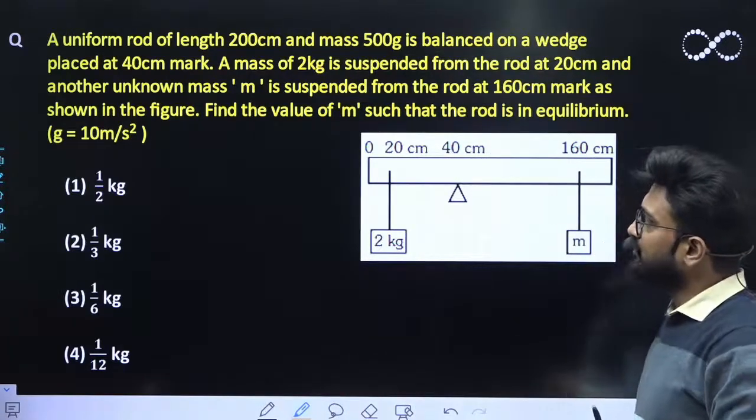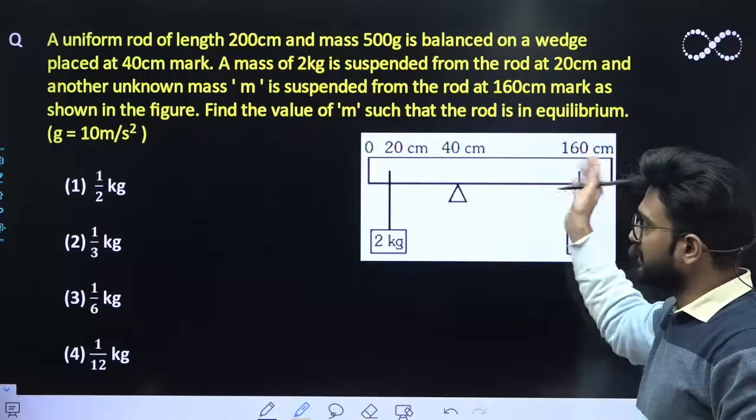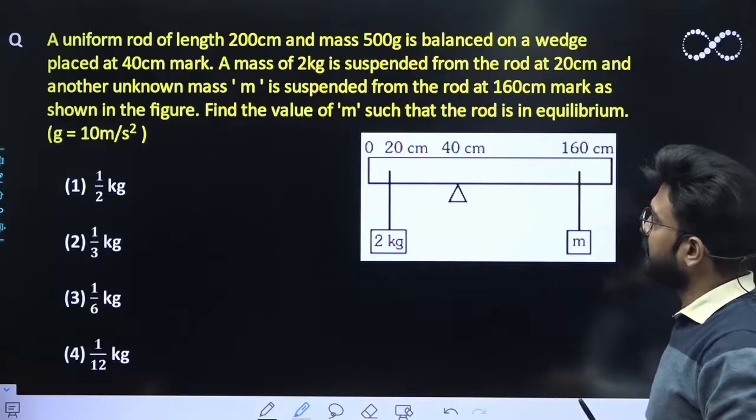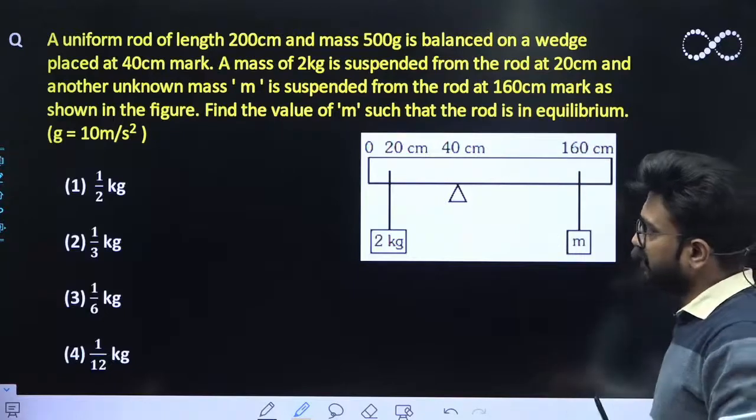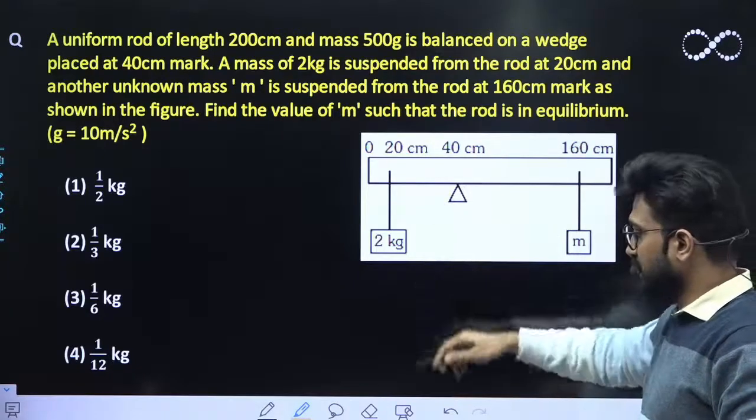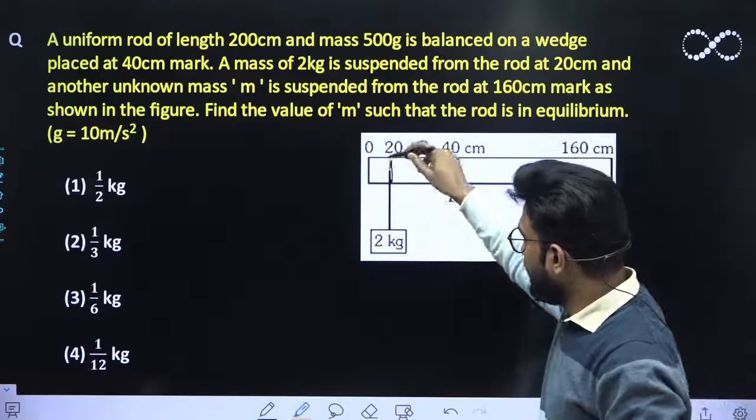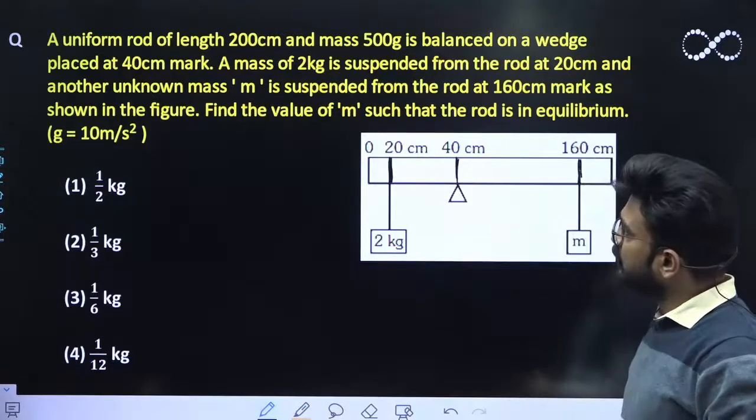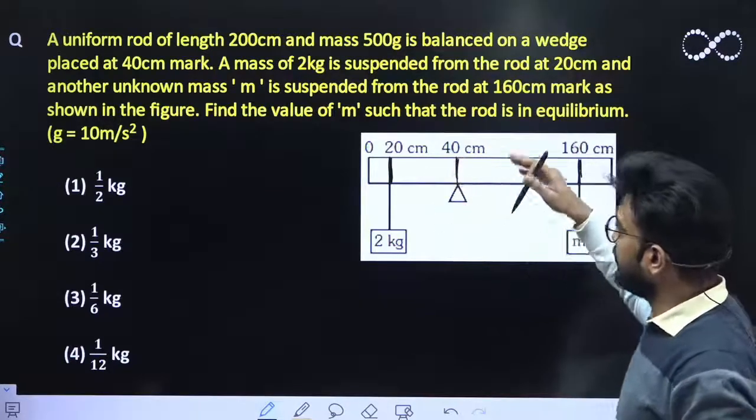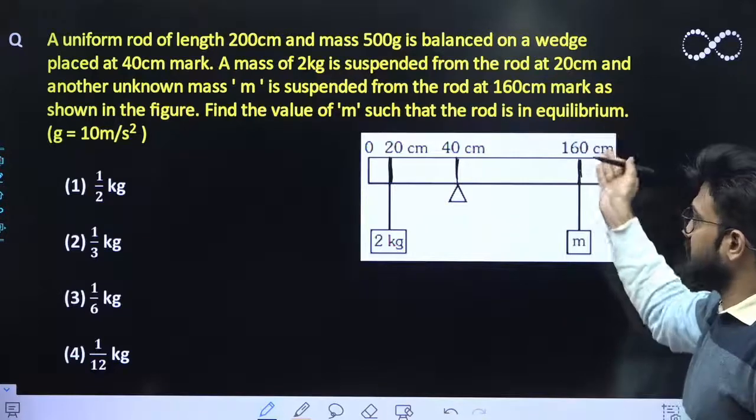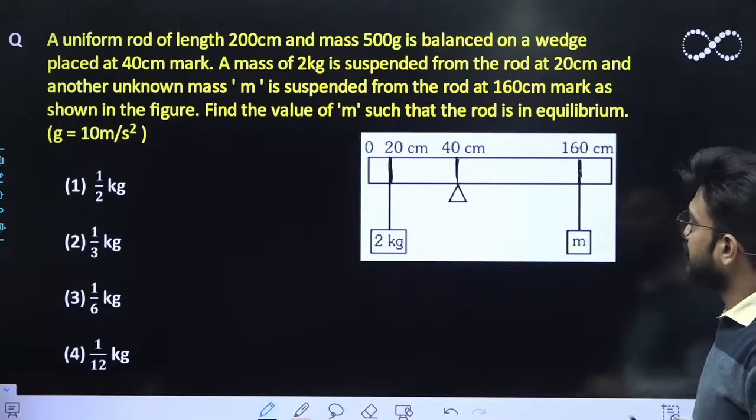Question says a uniform rod of length 200 cm and mass 500 grams (0.5 kg) is balanced on a wedge placed at 40 cm mark. This is a wedge with the balancing point here, and masses are also attached to it. A mass of 2 kg is suspended from the rod at 20 cm mark and another mass of m kg is suspended from the rod at 160 cm mark as shown in the figure. Find the value of m such that the rod is in equilibrium.